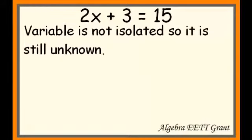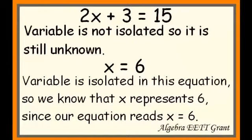If we're given something like 2x plus 3 equals 15, the variable is not isolated. It's not on the side by itself, so we still don't know what x is. We'd have to solve this equation to find out what x is. But if you're given something like x equals 6, x has been isolated, so you know in this equation the value of x is 6.